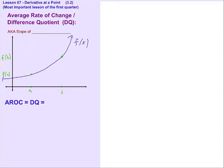What we call average rate of change, or the difference quotient, is measuring the same thing you learned about in Algebra 1, rise over run, slope.